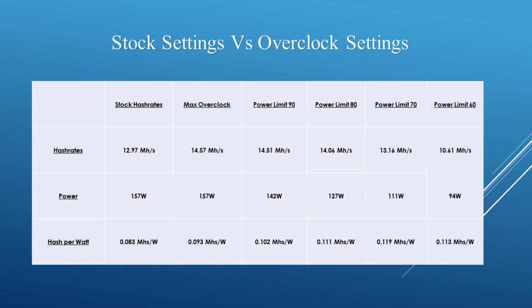In conclusion, comparing the overclocks, putting the power limit at 70 gives the best hash per watt ratio. But depending on the price, the difficulty, and your electricity costs, it may be best to increase or decrease your power depending on your situation.